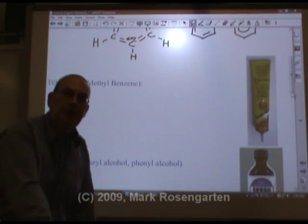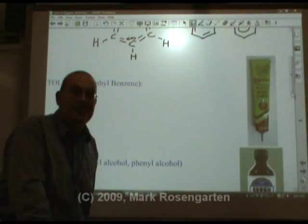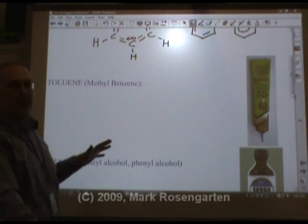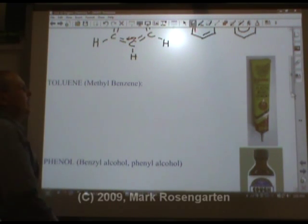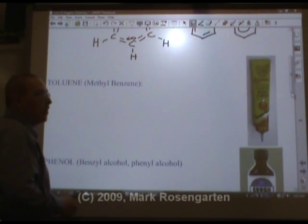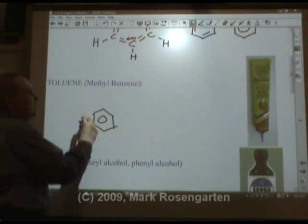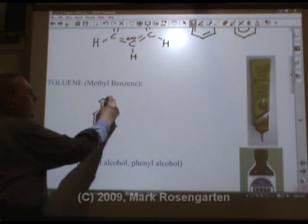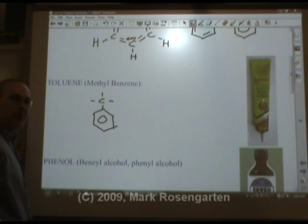Benzene is an absolutely amazing non-polar solvent because it's loaded with lines of symmetry. But it's also incredibly dangerous and poisonous, so we use something called toluene instead. Toluene is used in plastic model cement for gluing polystyrene plastic parts together. It's benzene that has a methyl group — a single carbon with three hydrogens — attached to it. Methylbenzene. This is also extremely dangerous and flammable, but not as bad as benzene.